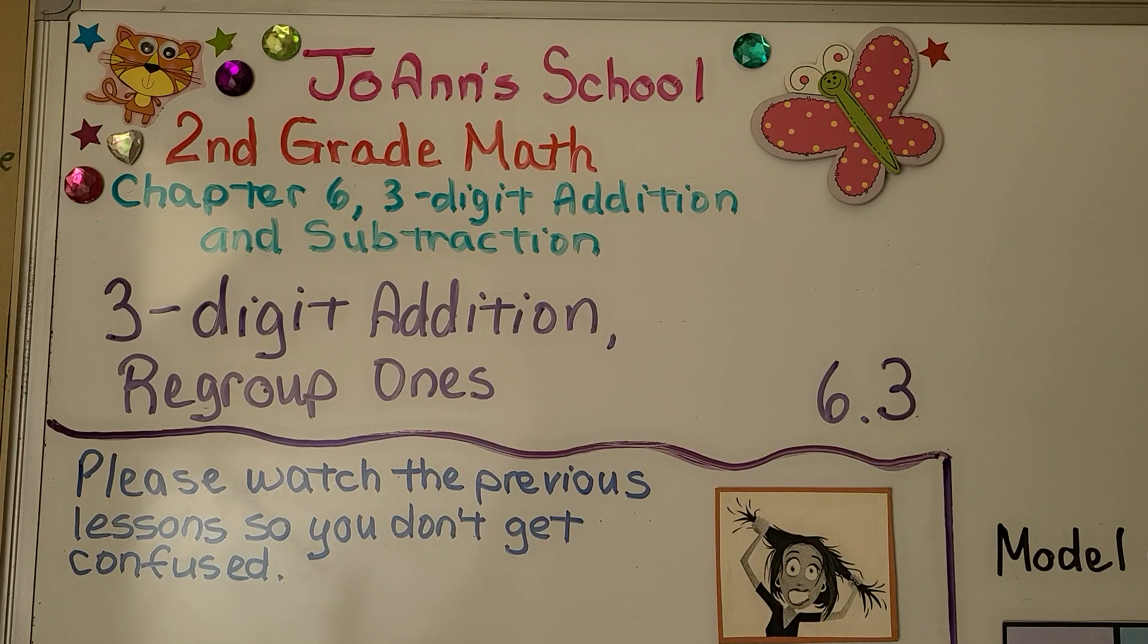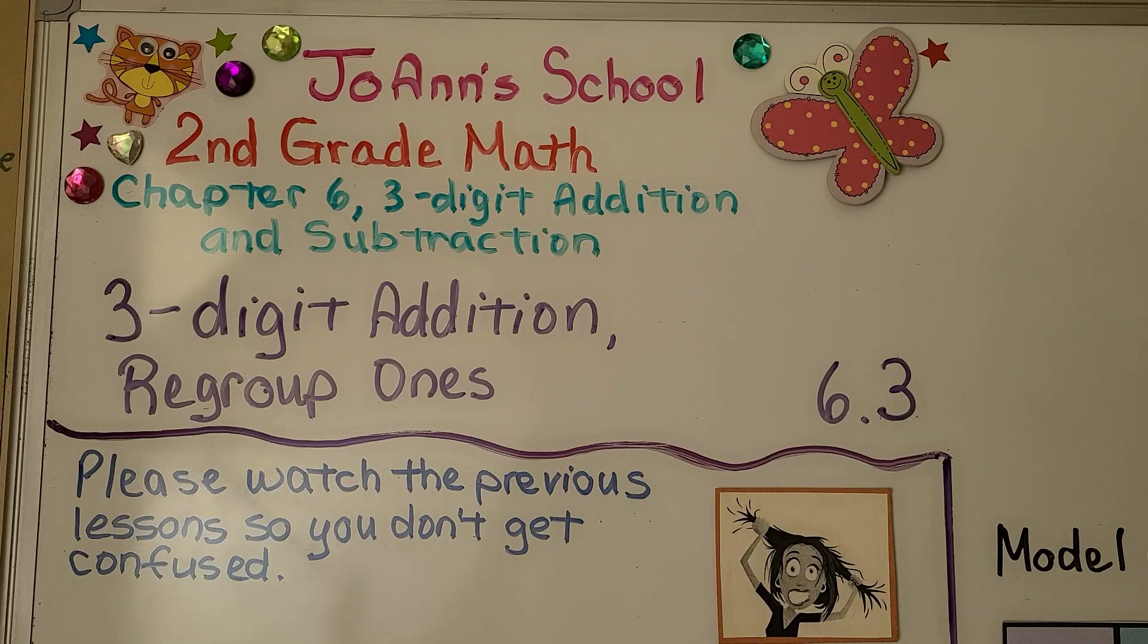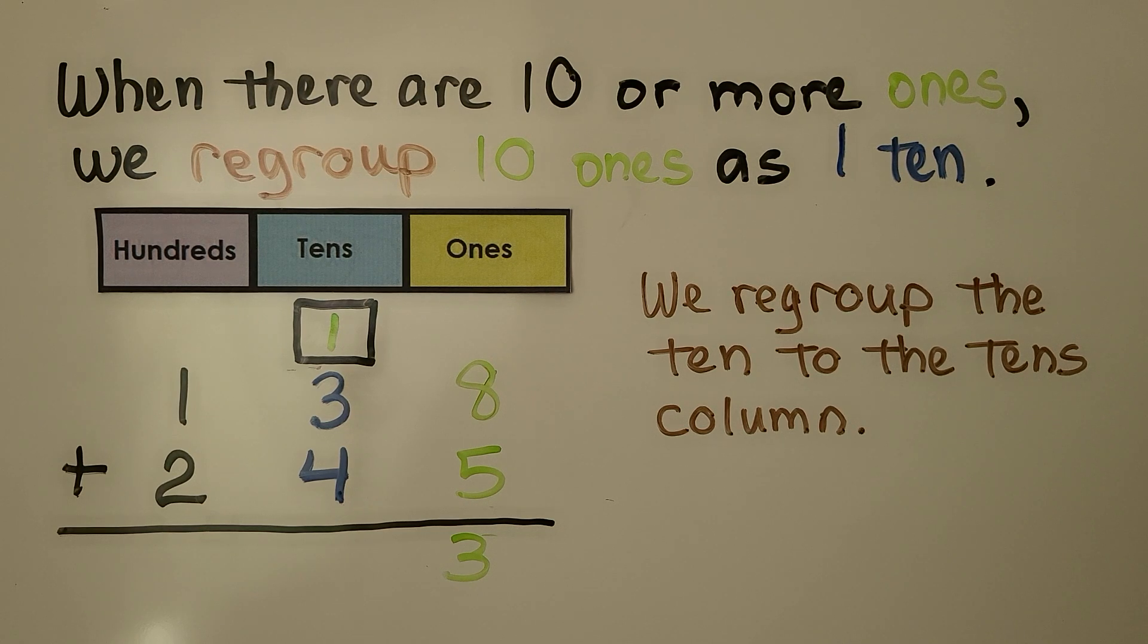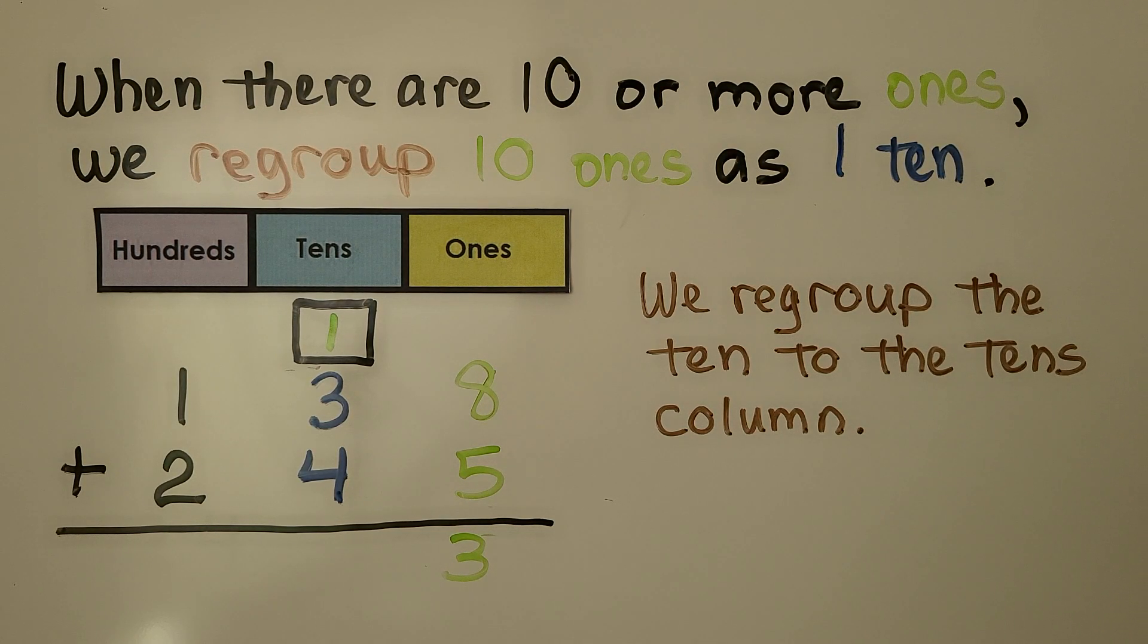Lesson 6.3: Three-Digit Addition, Regroup Ones. When there are ten or more ones, we regroup ten ones as one ten. We regroup the ten to the tens column.